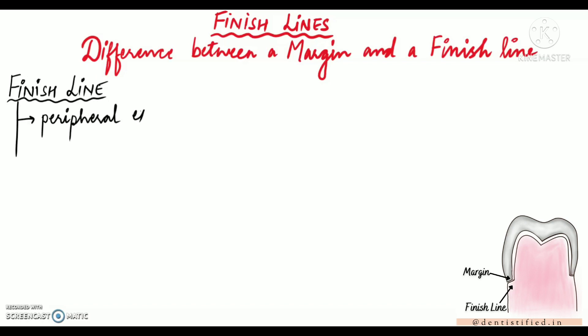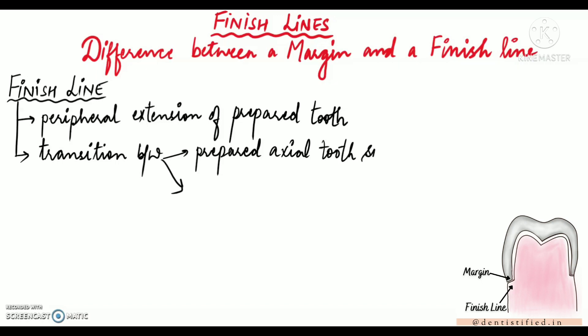A finish line is basically the peripheral extension of the prepared tooth that marks the transition between the prepared axial tooth surface and the remaining unprepared tooth surface. So basically, finish line marks the transition between the prepared and unprepared tooth surface as shown in the diagram.